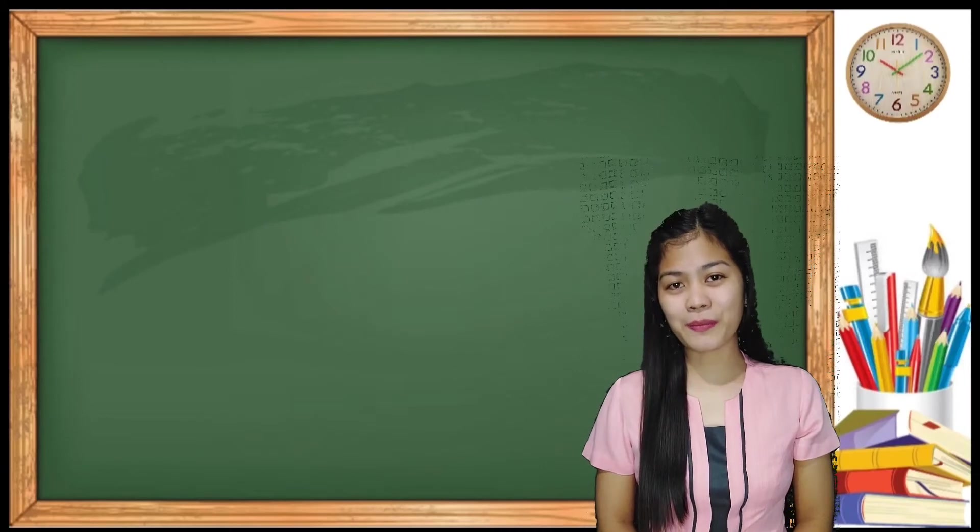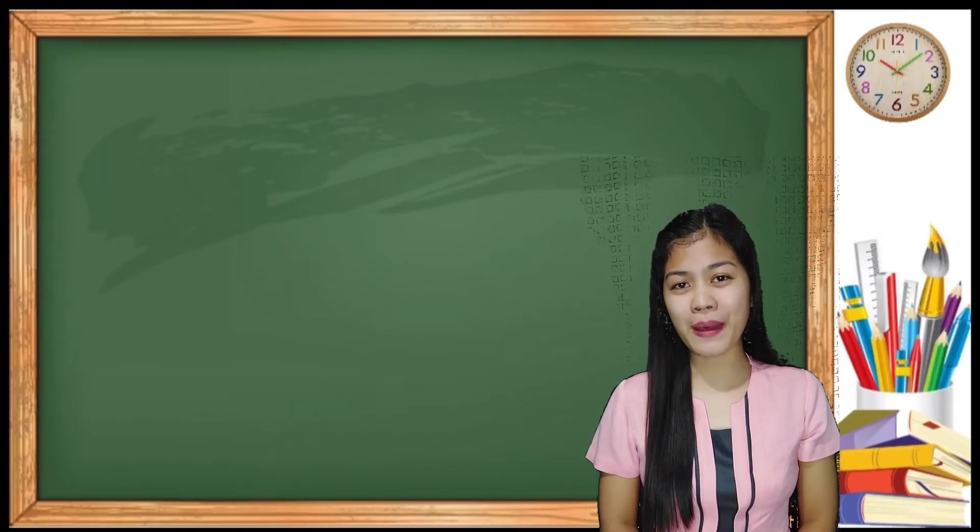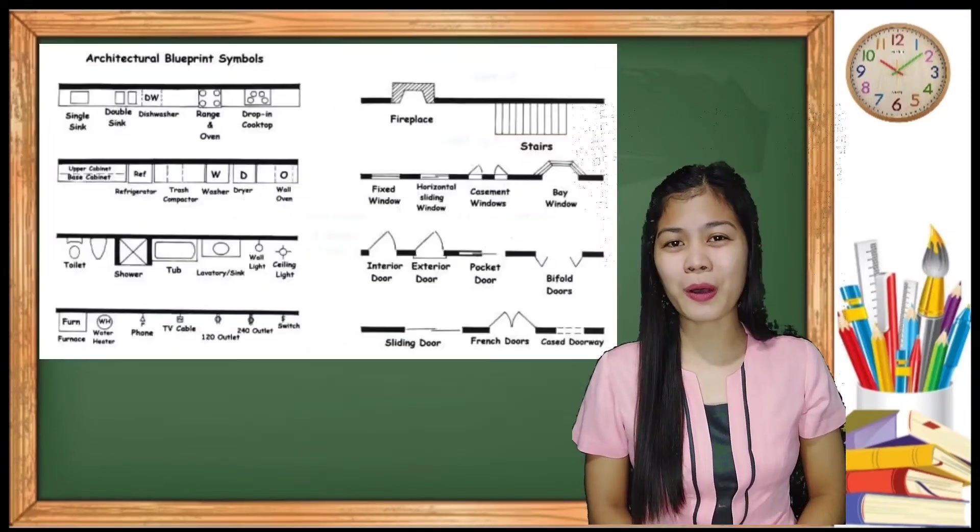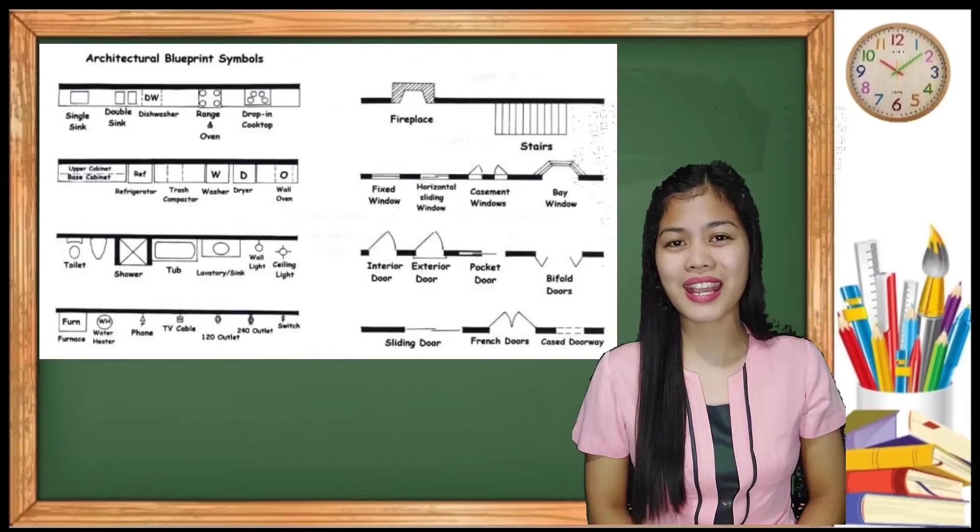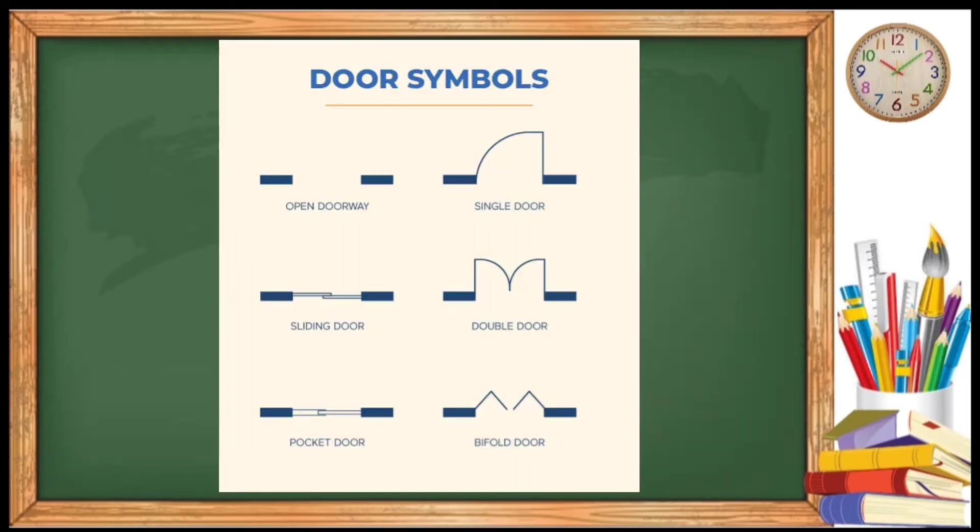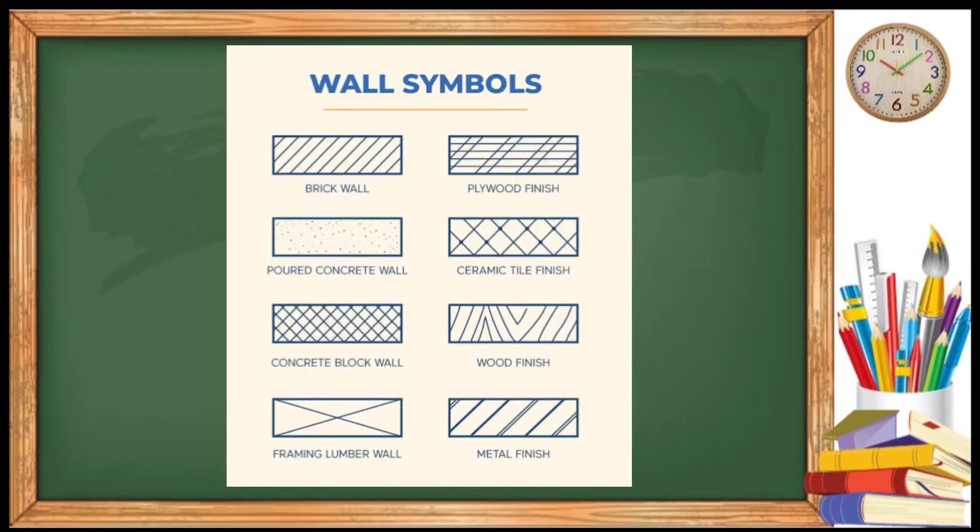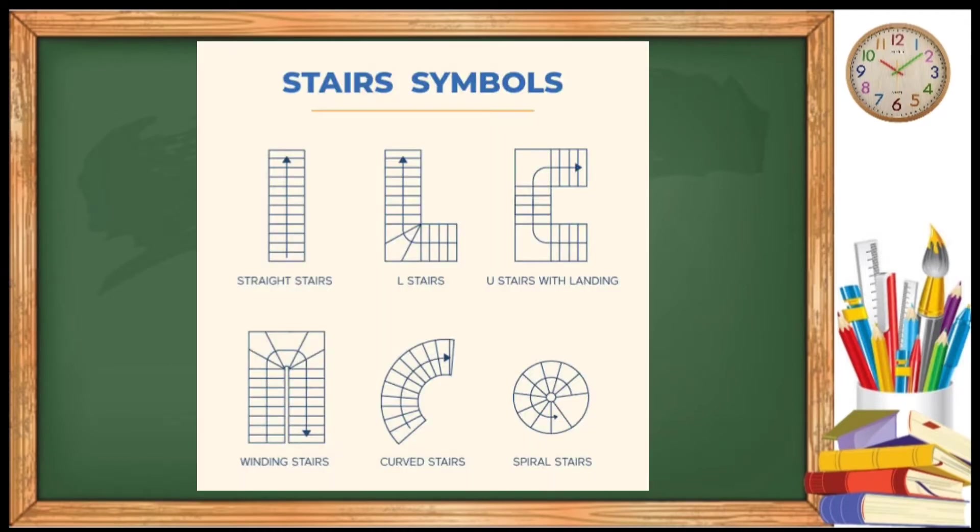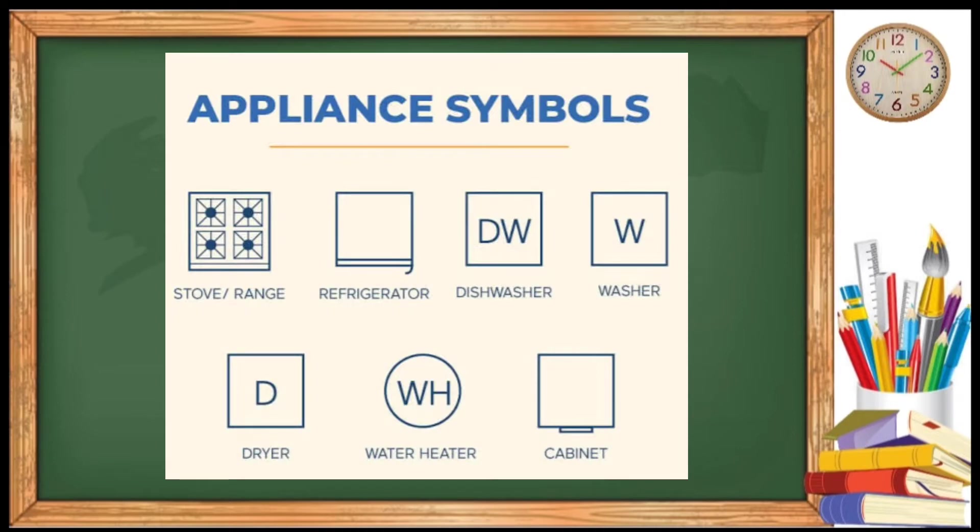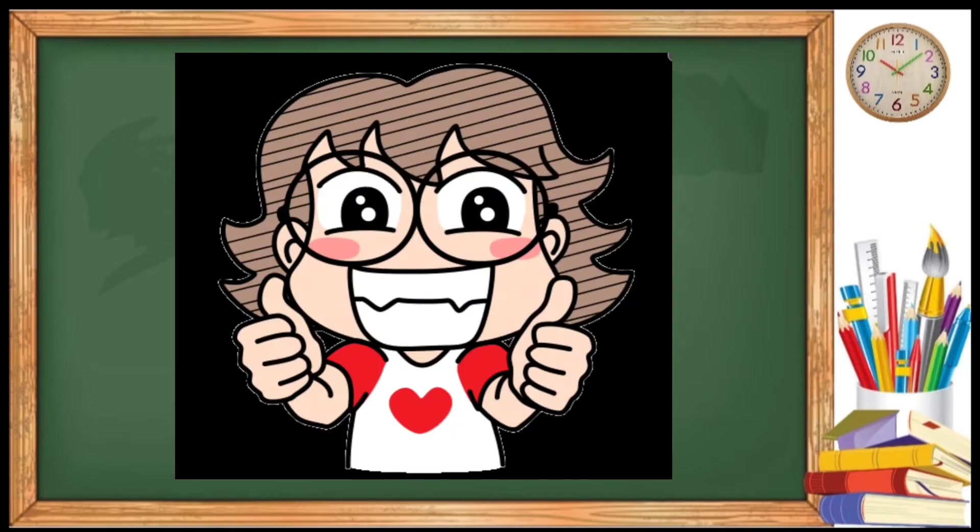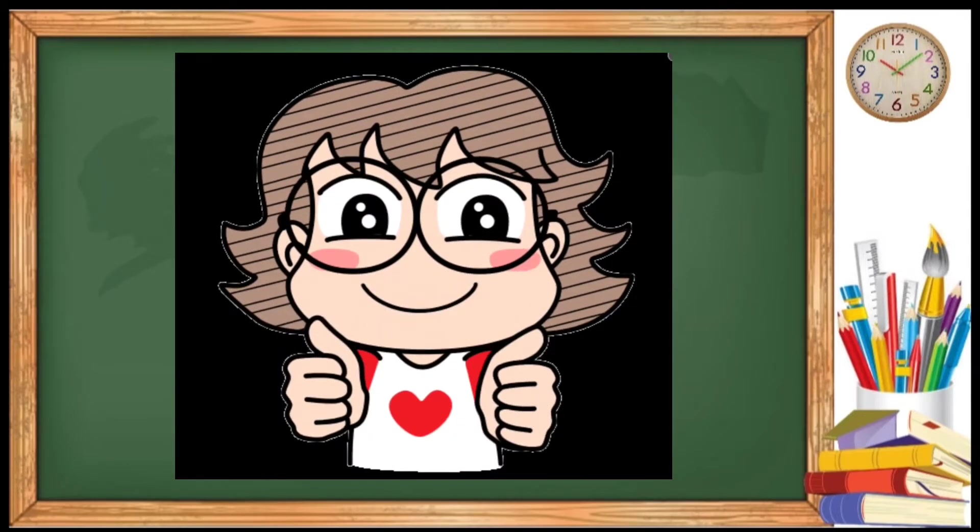Looking back to our previous discussion, what have you learned about the lesson? Last time, we tackled the architectural symbols in floor plan. We will now enumerate the different symbols used in floor plan. We have door symbols, wall symbols, electrical symbols, stair symbols, appliance symbols, heating, ventilation, and air conditioning symbols.